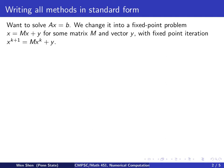We will now write all three methods in a standard form. Recall that we want to solve Ax = b, and we actually perform some fixed point iteration. We change it into a fixed point problem in the form x = Mx + y for suitable matrix M and suitable vector y. Writing this as fixed point iteration, we have x^(k+1) = Mx^k + y. We want to show that all three methods could be written in this form with suitable choices of M and y.